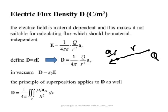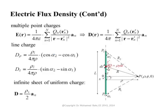Keep in mind: the electric field is in volts per meter. When you multiply by epsilon, you get D, which is in coulombs per meter squared. The law of superposition applies to D as well.